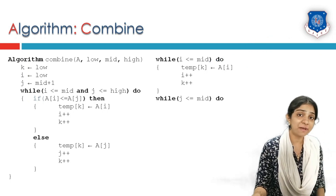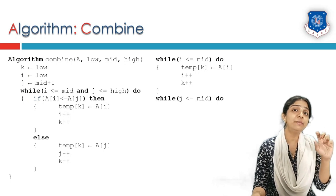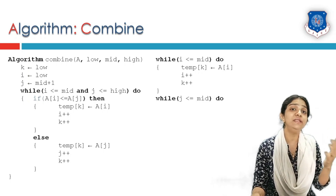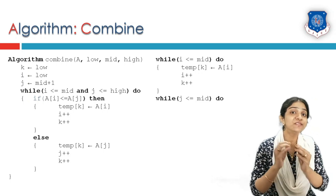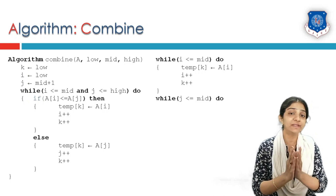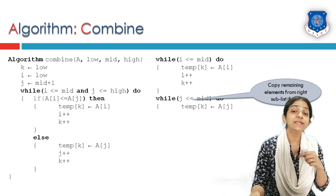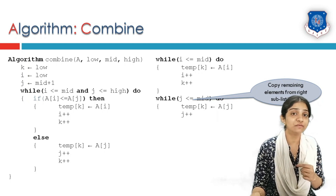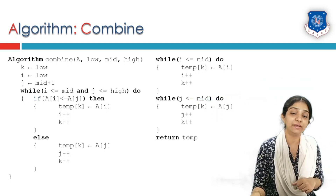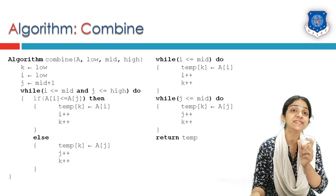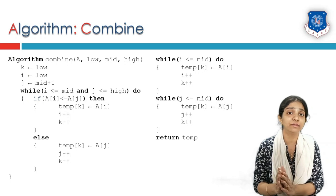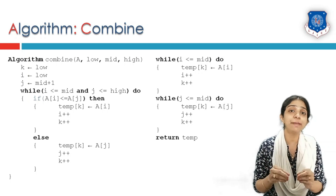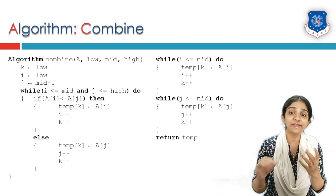We must also check the right subarray: while j ≤ high, copy a[j] into temp[k] and increment both j and k. At the end, temp contains the combined sorted solution. We return this temp array as our combined sorted merged list.